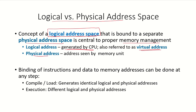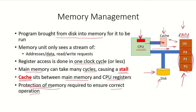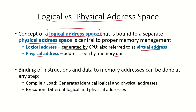The physical address is the address seen by the memory unit. The CPU will generate the logical address, which will somehow be mapped into a physical address, and this physical address will be the one seen by the main memory.